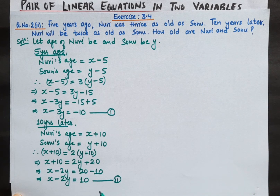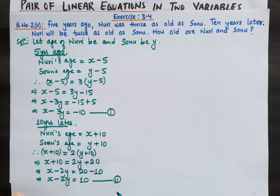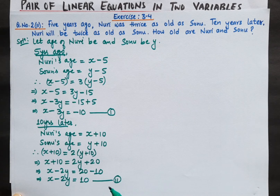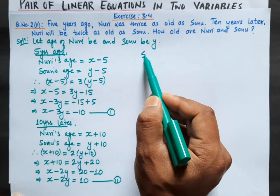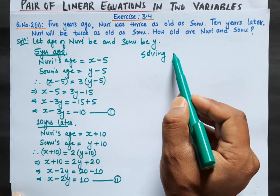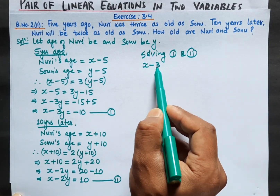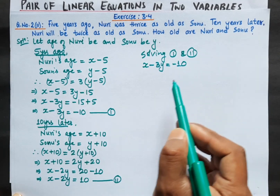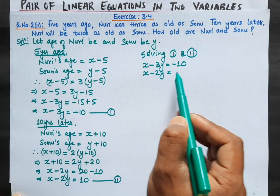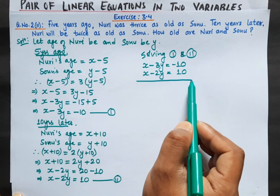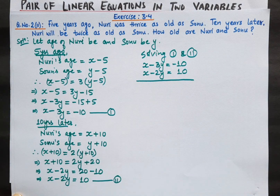Now we have two equations. We can solve them using any method — cross multiplication, substitution, or elimination method. Here I am using the elimination method. For elimination, the coefficient of either x or y must be the same. We can see that the coefficient of x is the same in both equations, so we can directly subtract equation 2 from equation 1.